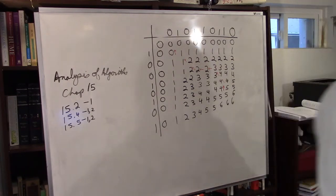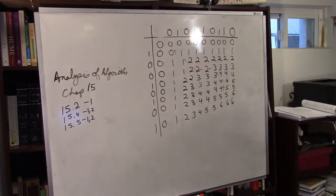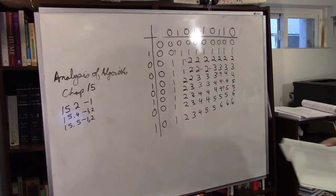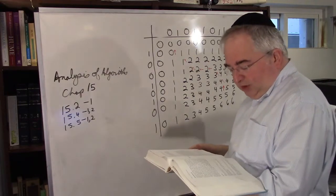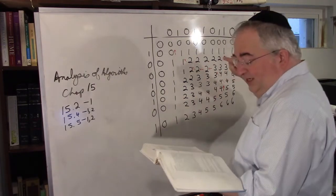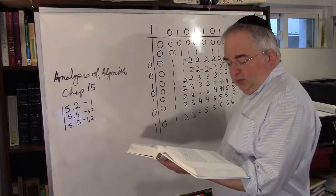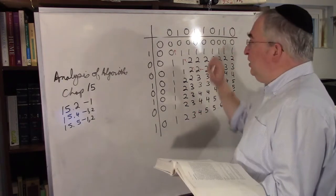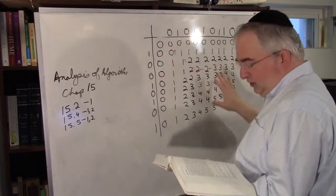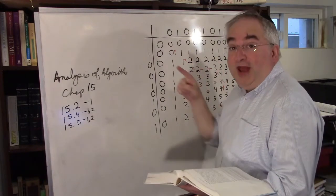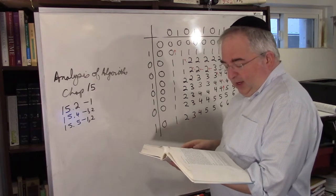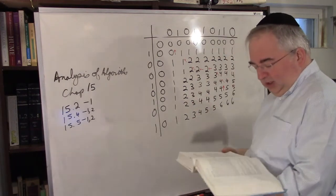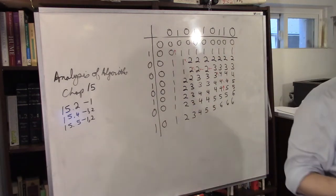Let me read the question for number two before I erase this. Give a pseudocode to reconstruct a longest common subsequence from the completed C table and the original sequences X and Y. So they give you the X, they give you the Y, they give you the C table without the arrows, and it should reconstruct the LCS.